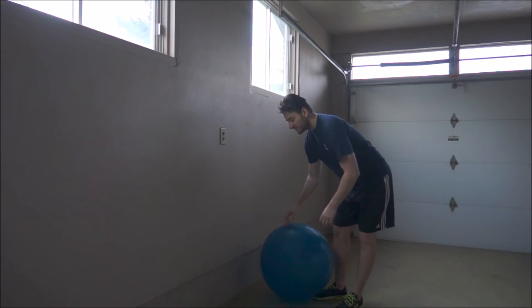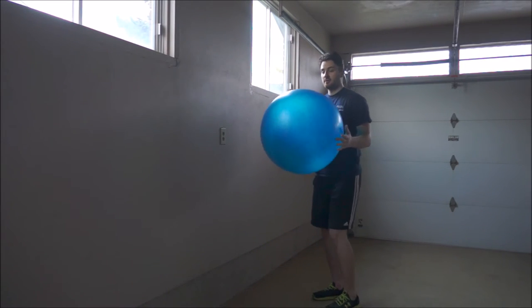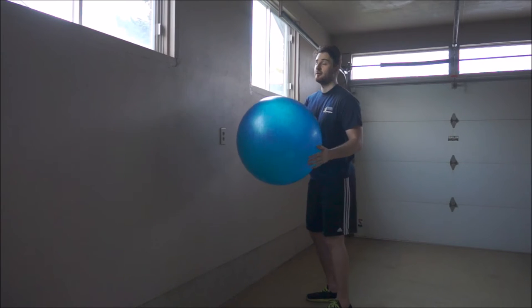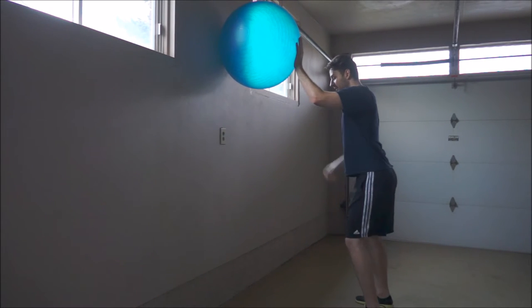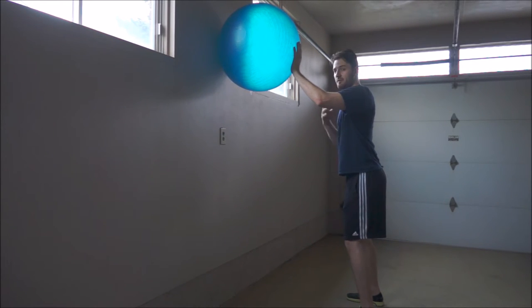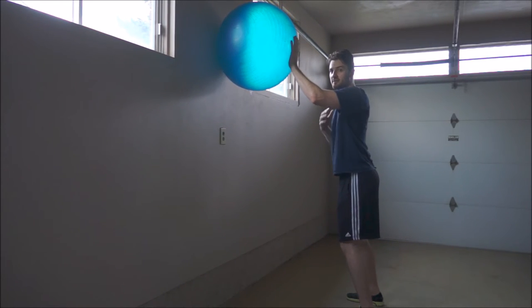What you need for this exercise is a stability ball. You're going to take your stability ball and place it up against the wall. Then you're going to take about a step back, but you still want to be at a point where you can apply pressure into the ball and press it upwards.